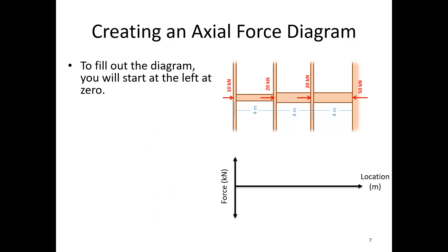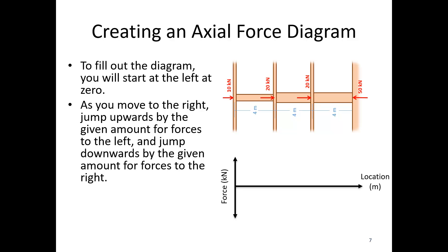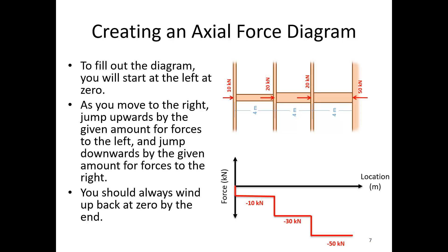To fill out the diagram you start at the left at zero. As we move to the right we're going to jump upwards by a given amount for forces to the left, and jump downwards for forces to the right. For example, immediately at the beginning I hit that 10 kilonewtons to the right, so I go down. Then I get to the next location where I hit 20 kilonewtons to the right, so I jump down an additional 20 — bringing me to negative 30. That goes until the next force: another 20 kilonewtons to the right brings me down to negative 50. At the very end the 50 kilonewtons to the left means I jump up 50, which brings me back to zero.